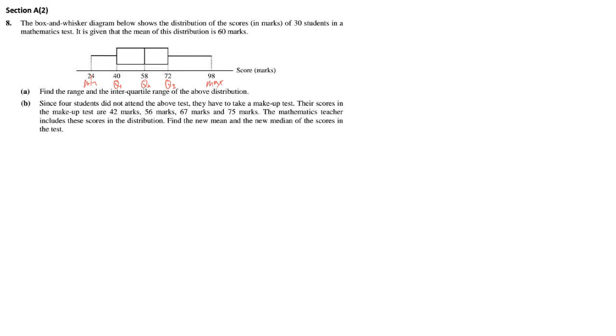It's easy to get the range and IQR here. The range means maximum value minus minimum value. The maximum is 98 while the minimum is 24, so we have 74 marks. The interquartile range means the middle 50% of data. IQR equals Q3 minus Q1, which is 72 minus 40, giving us 32 marks difference.